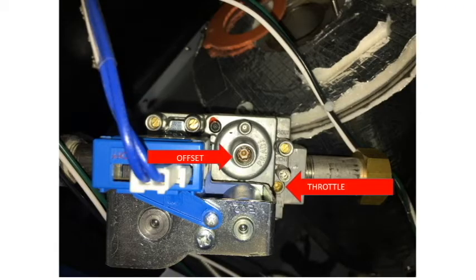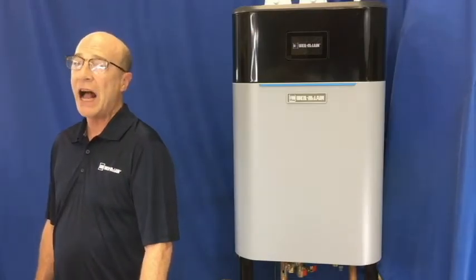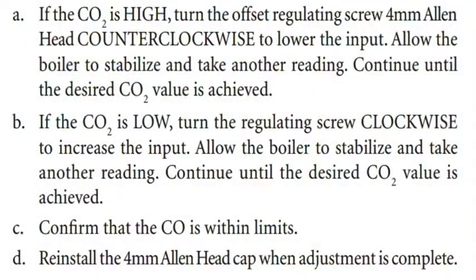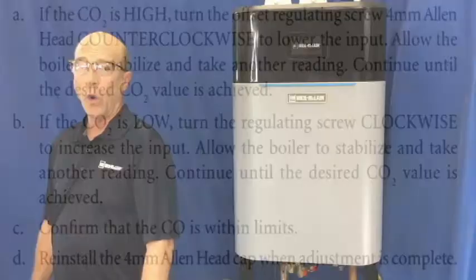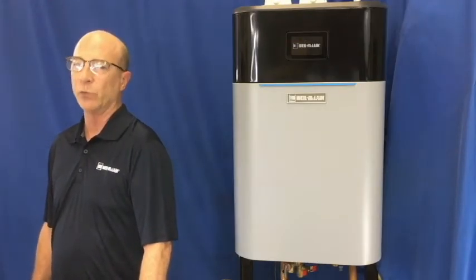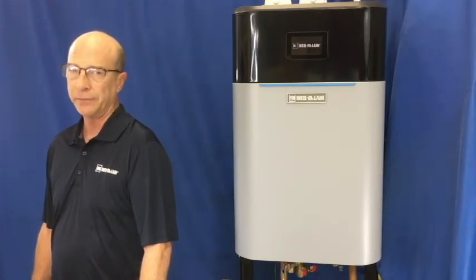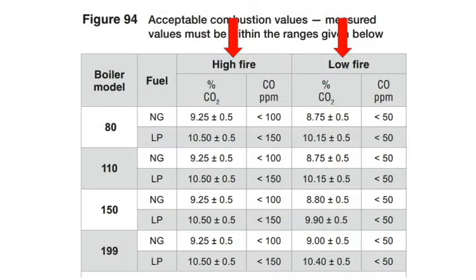Now, let's look at the low fire readings. Check your CO2 level. If it's high, turn the offset screw counter-clockwise. If low, clockwise. Once you have hit the target, observe the carbon monoxide reading and compare it to the chart.